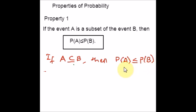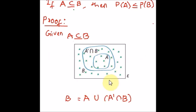Consider two events A and B such that A is a subset of B. When proving a theorem, read the statement carefully and note all given information. The given information is A ⊆ B. From the diagram, B can be defined as A union (A complement intersection B), and these two parts are mutually exclusive. So we can identify which axiom to apply — the mutually exclusive axiom, which is the third axiom.